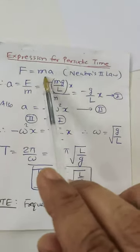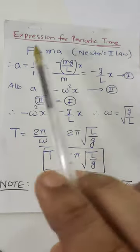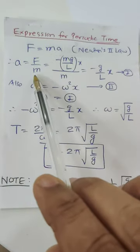We know F equal to ma by Newton's second law. Therefore what is a equal to? F upon m.